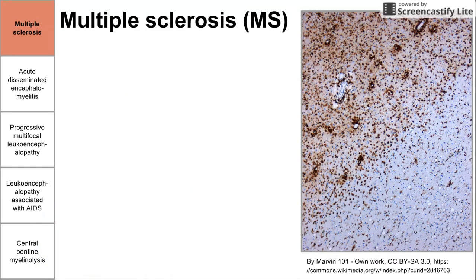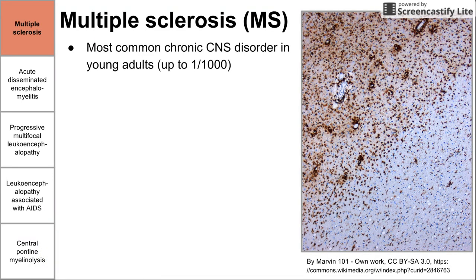Let's begin with the first one: multiple sclerosis. This is the most common central nervous system disorder and the most common demyelination disorder in young adults, usually presenting in people in their 20s and 30s. Prevalence is up to 1 in 1,000, so not too rare.